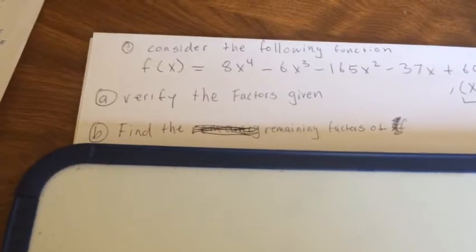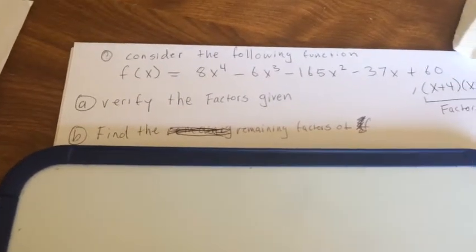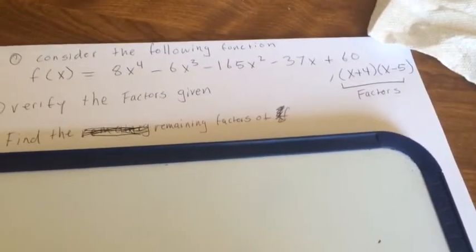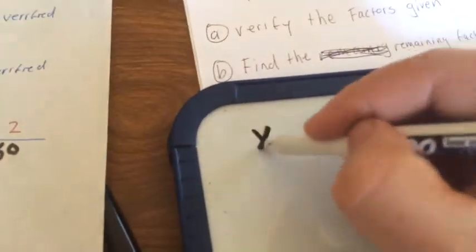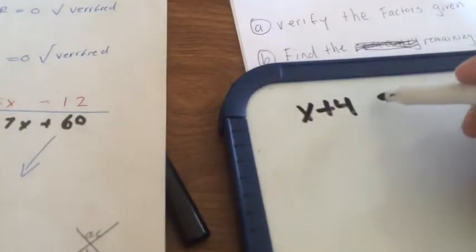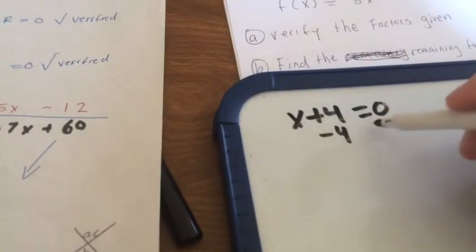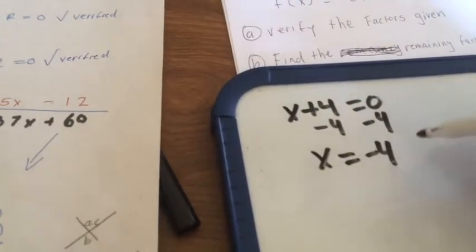Part A: Verify the factors given. To verify those two factors, we're going to use synthetic division. Our two factors, let's start with x plus 4. Set that equal to 0, subtract 4 on both sides, you get x equals negative 4.